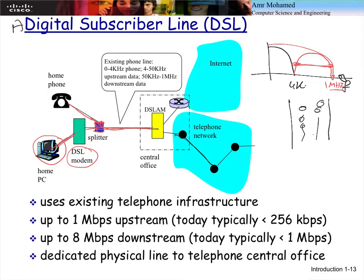The DSL modem shifts the data signal in the frequency domain above 4 kHz, then mixes the two signals. By mixing, there is no overlap because in the frequency domain they are separate. At the ISP level, they have both PSTN infrastructure and internet infrastructure. Depending on the incoming traffic, the voice signal goes to the PSTN and the internet traffic goes through the core network. This device at the ISP is called the DSL Access Multiplexer (DSLAM).